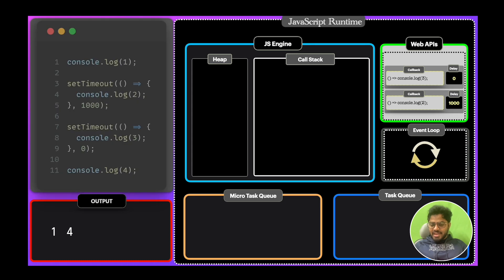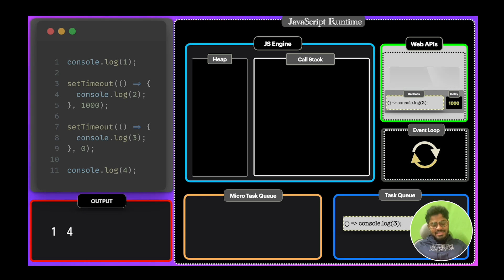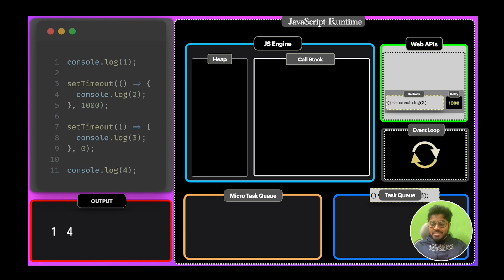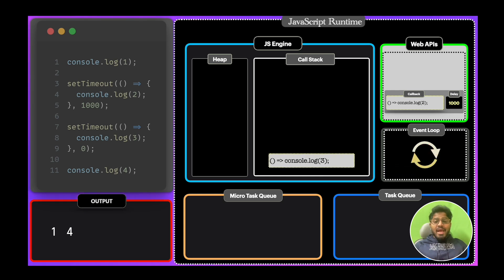Once after the specified delay, the callbacks present in the web API environment will be pushed to the task queue. We have callbacks with 0ms and 1000ms delays. The callback with 0ms will be pushed to the task queue first, and our event loop continuously monitors the call stack and task queue. As the call stack is empty, this callback will be pushed to the call stack and executes to give output 3.